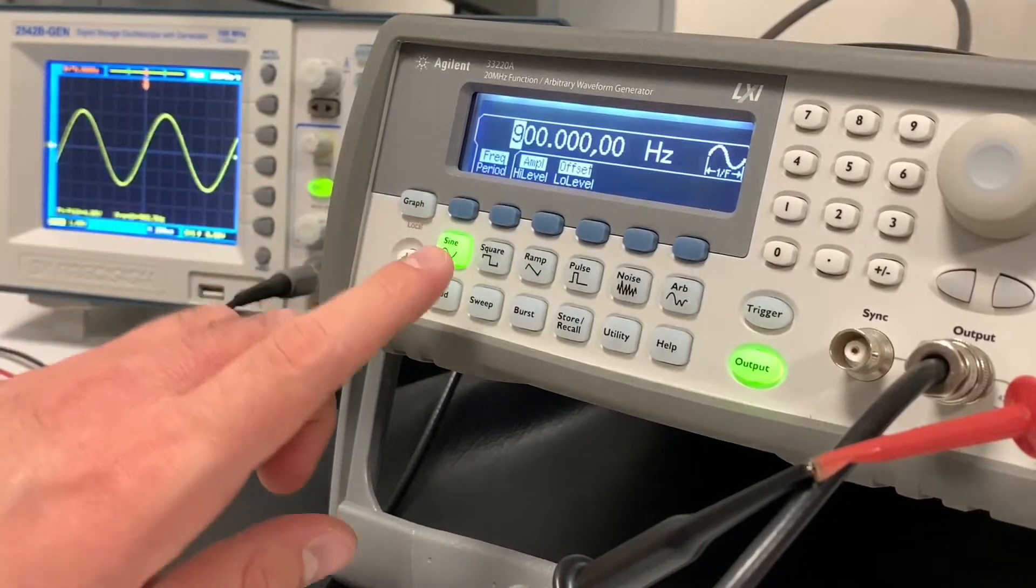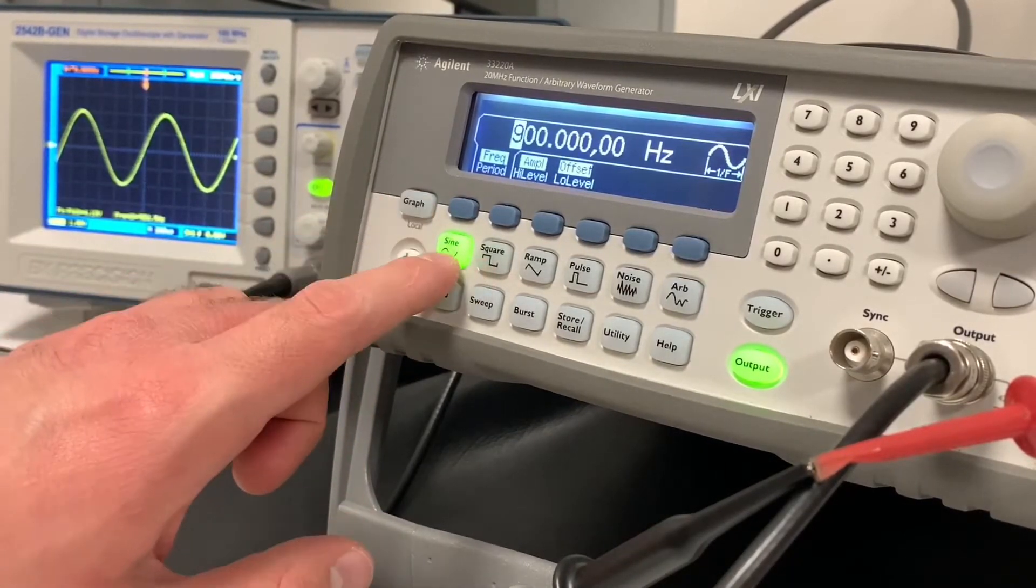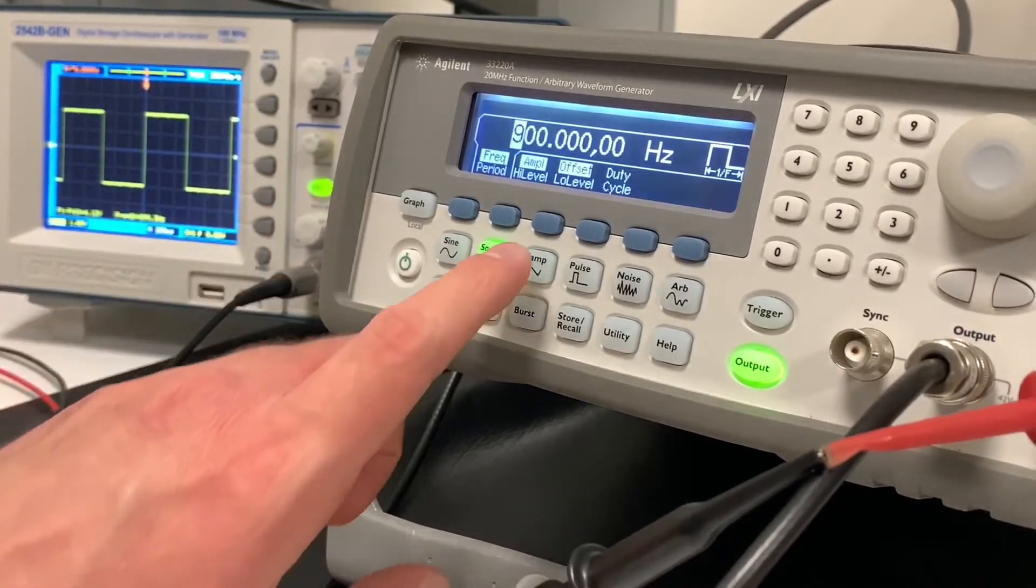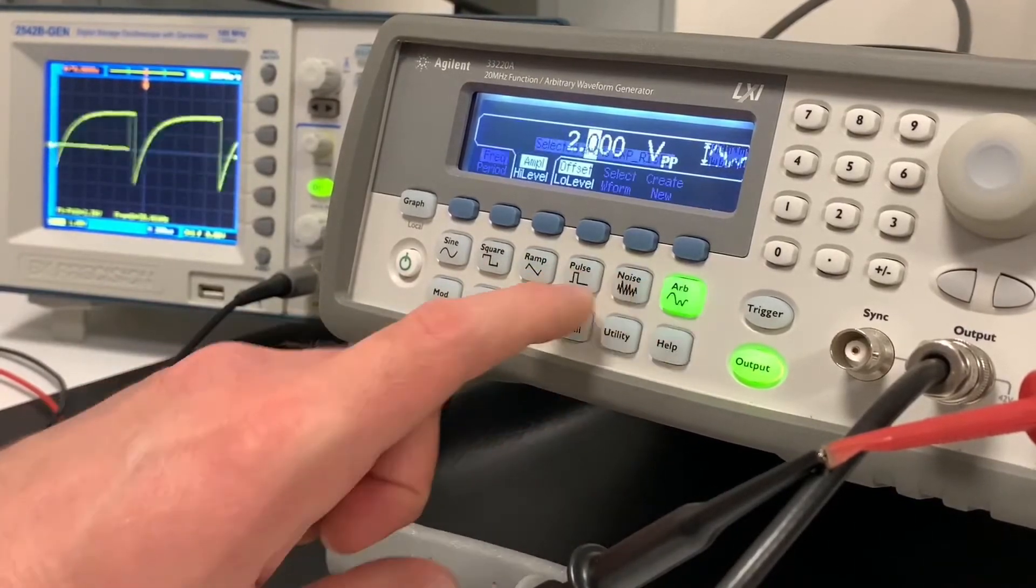You can also change the type of wave that it's being put out. Right now it defaults to sine wave, but you can click square wave. It'll switch to a square wave. Same for ramp, pulse, noise.